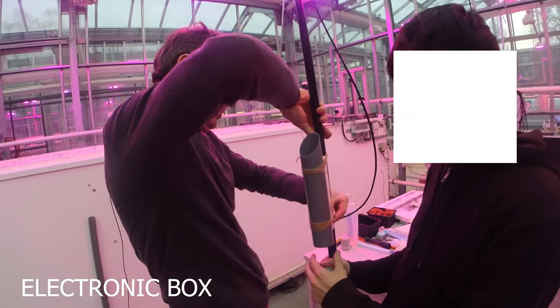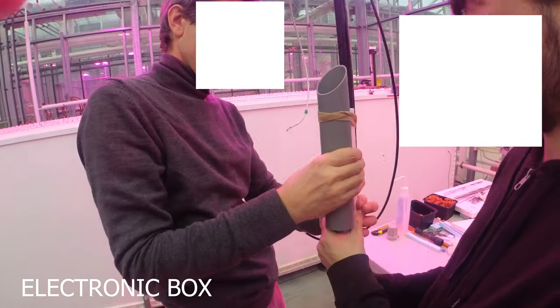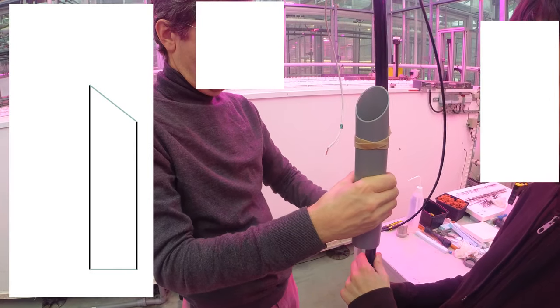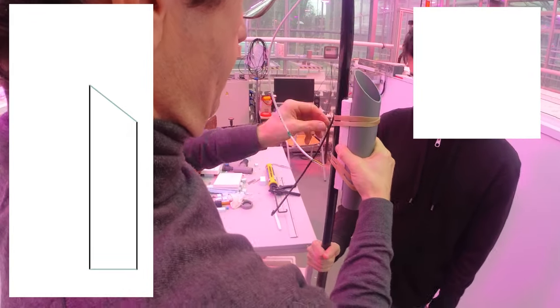First, we will start with the electronic box. Our electronic box is a simple PVC tube that we attach to the fishing rod with two elastic bands. You can attach it with something else, like a steel collar, for example.